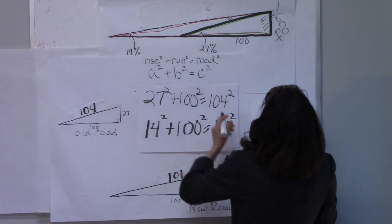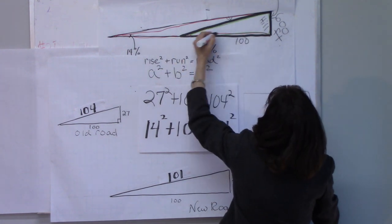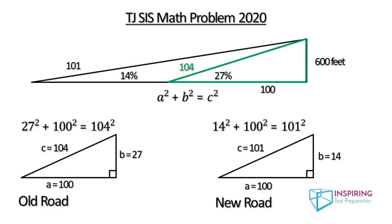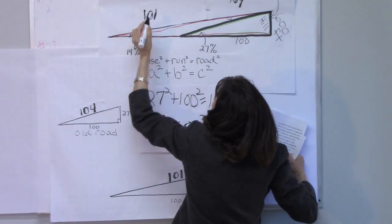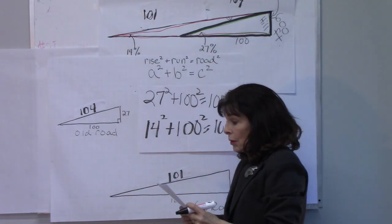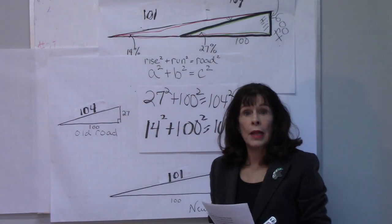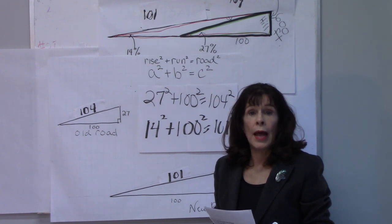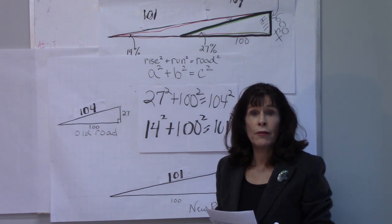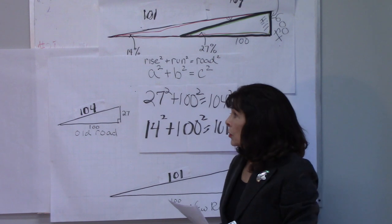And so we superimpose the short road over the long road and the short road's relative length is 104 and we have 101 for the new road. So now how do we get the length of the old road and the new road in feet? So we'll go to another screen.